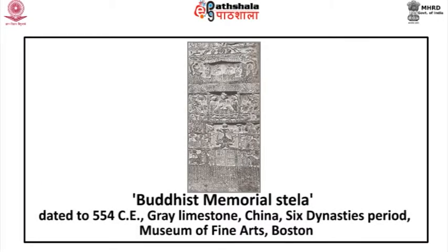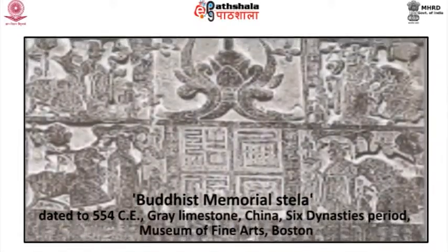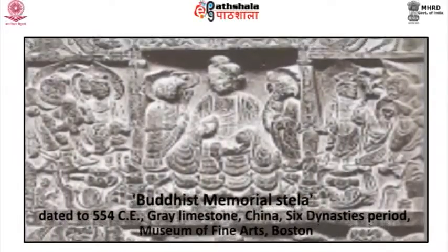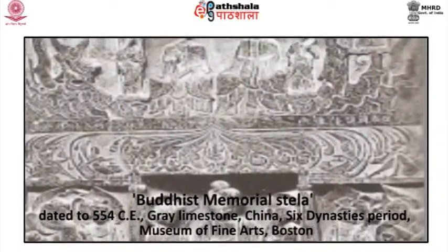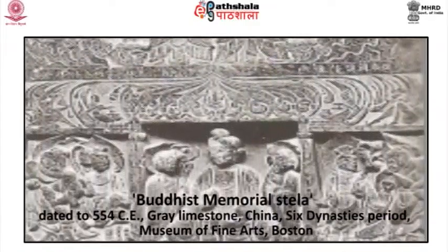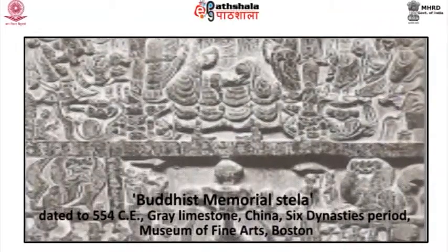An example is the Shakyamuni Triad, dated to 537 CE — a stela in limestone belonging to the Eastern Wei dynasty, at present in the Cleveland Museum of Art. The smile of Shakyamuni is more refined, gracious, and immediate; the eyes have a characteristic Chinese linearity. The long neck and waterfall drapery are carved in low relief as if painted. In the outer band of the halo one can discern a demon mask that dominates the lotus scroll derived from Buddhist iconography. A Buddhist memorial stela dated to 554 CE, made of gray limestone from the Sixth Dynasties period, is at present in the Museum of Fine Arts, Boston.